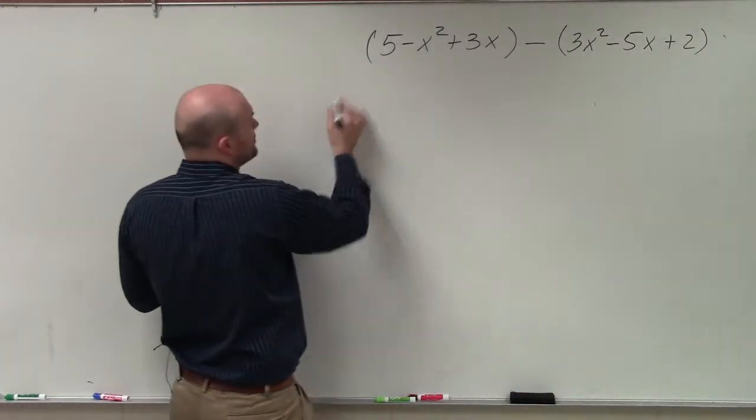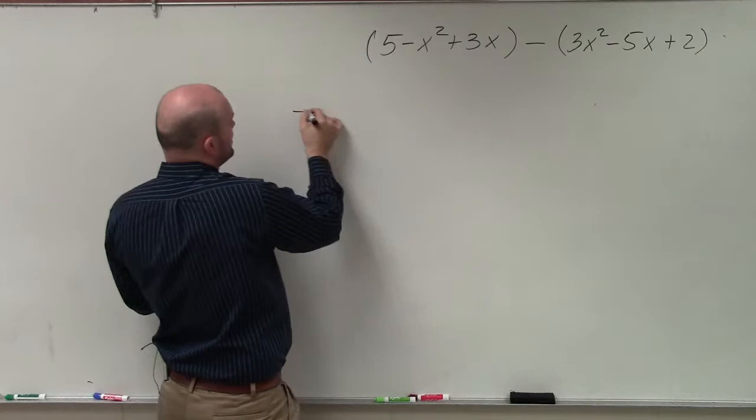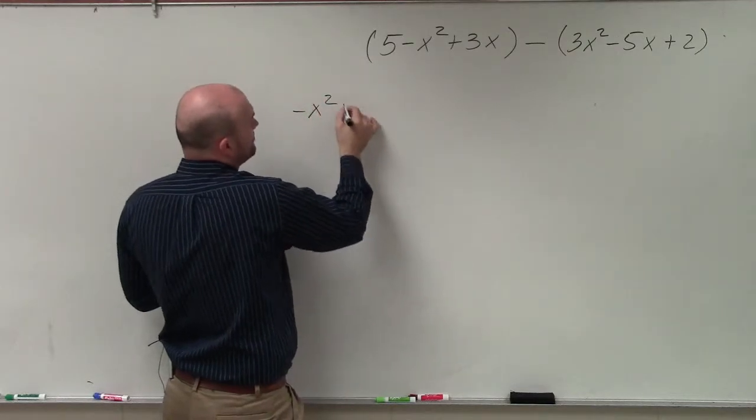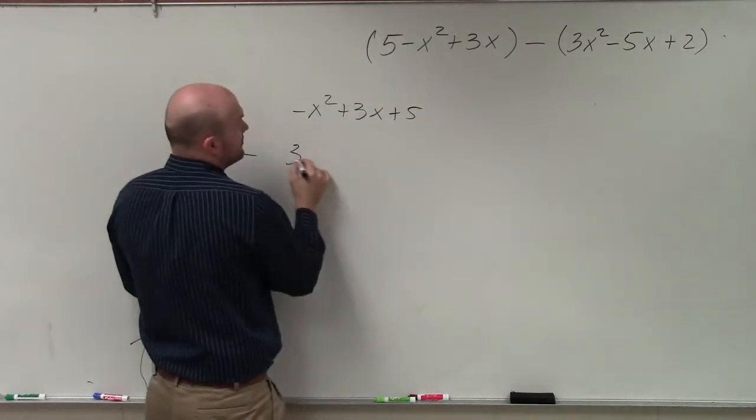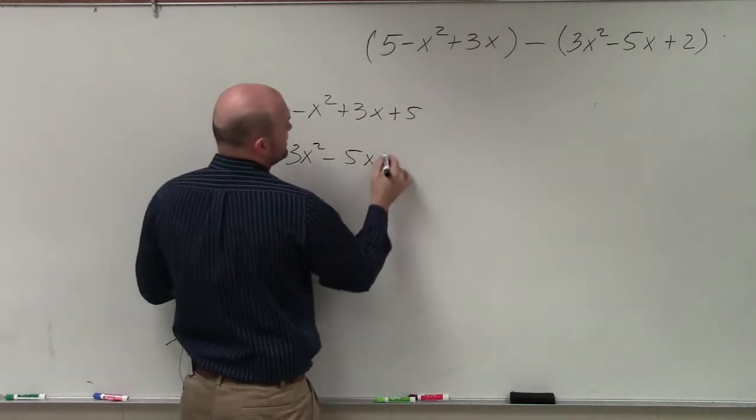I think, is to align them again, write them in descending order. So you could have -x² + 3x + 5, and then subtract the next one, 3x² - 5x + 2.